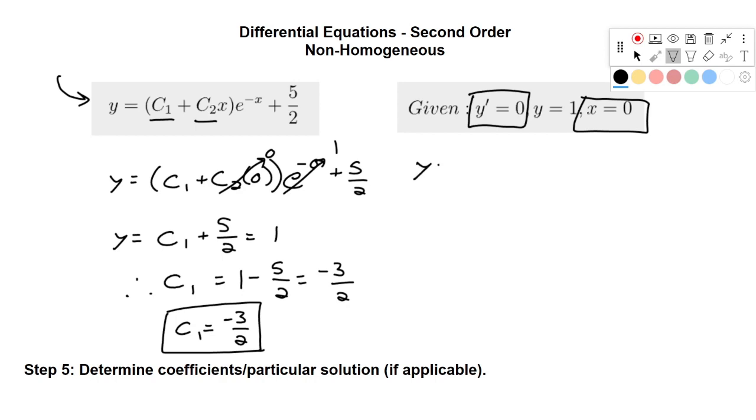So first thing I'm going to do is I'm going to distribute out that exponential, just to make it a little bit easier on us. So we'll have c1 e to the negative x plus c2 x e to the negative x plus 5 halves. And we can see we're going to have to use the product rule for this term here.